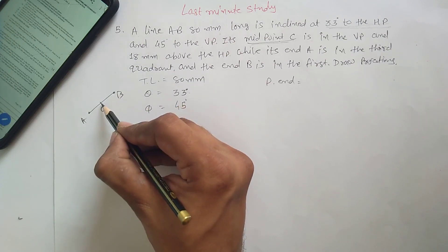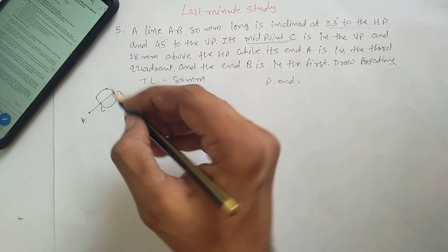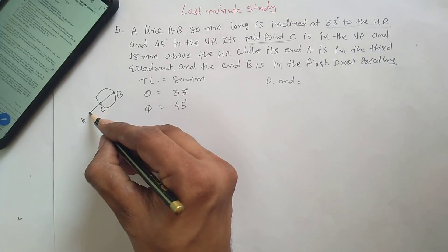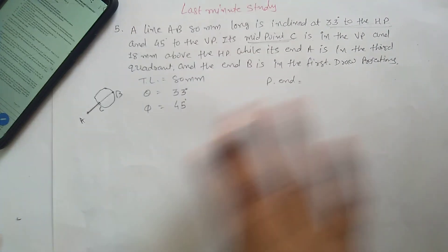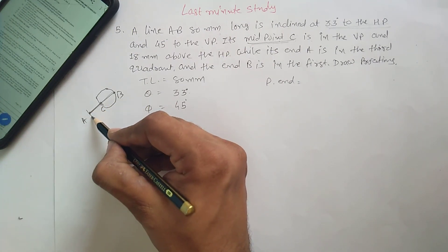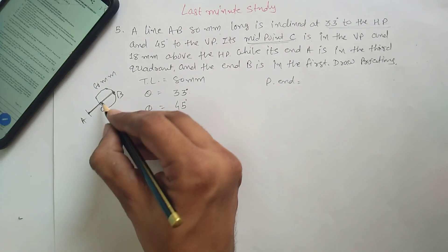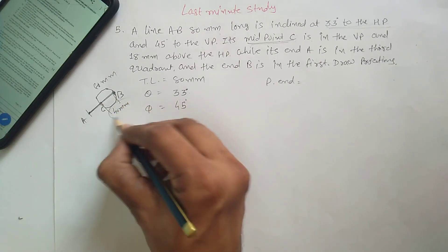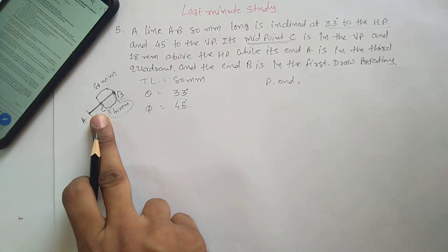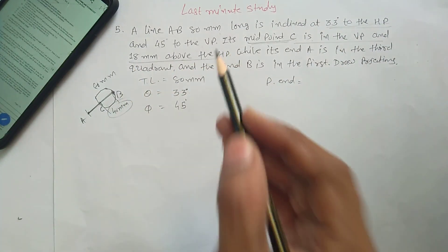Be careful. We are considering CB as one line. Once we complete the standard structure, we will add AC to find out the final AB line. So consider CB. C is the midpoint, and the length of AB is 80 mm, so the true length for line CB is 40 mm. We use this true length to construct our solution. The position of point C is on the VP and 80 mm above the HP.